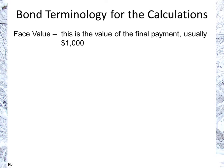Let's talk about the terminology we'll need. We have face value, also called par value. This is the value of that final payment, usually $1,000. If it's not specified in a question, you can normally assume that's the case, because that's the common value in North American bonds.